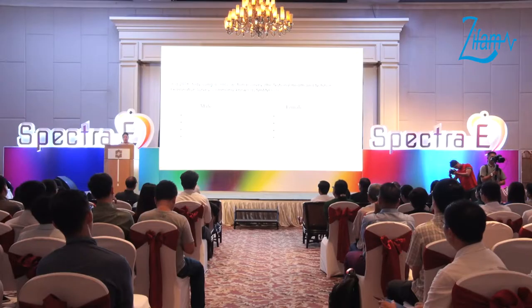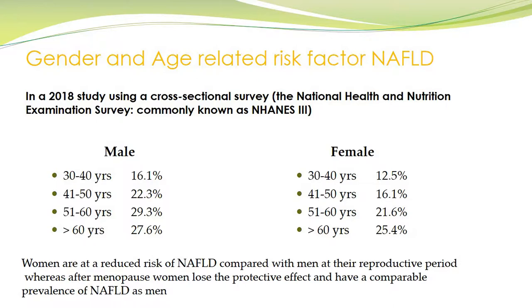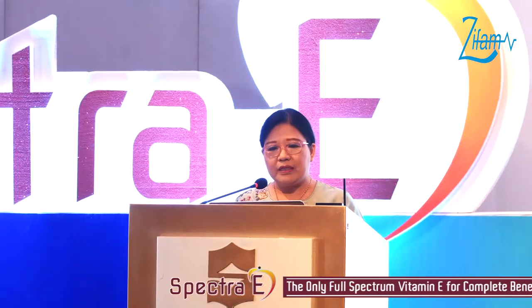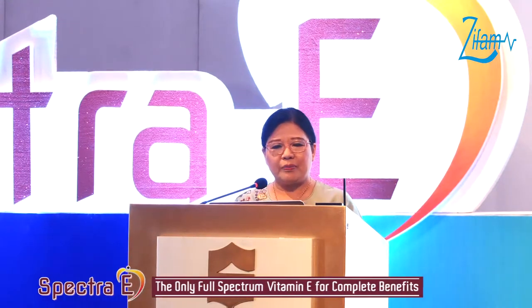There are many risk factors for NASH, among which gender and age are very important. A 2018 study showed that males and females between age 30 to 40 years had a prevalence of 16.1%, increasing to more than 60 years of age at 27.5–27.6%. For females, prevalence at 30 to 40 years was 12.5%, increasing to 25.5% at more than 60 years.